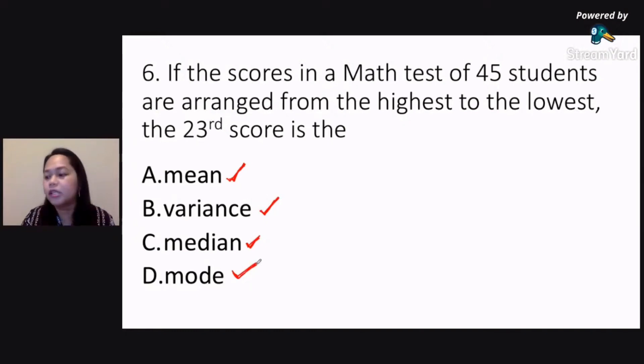Now in this case here, I think it's pretty obvious. The correct answer is letter C, the median. It's the middle score. So letter C, the median is your 23rd score.